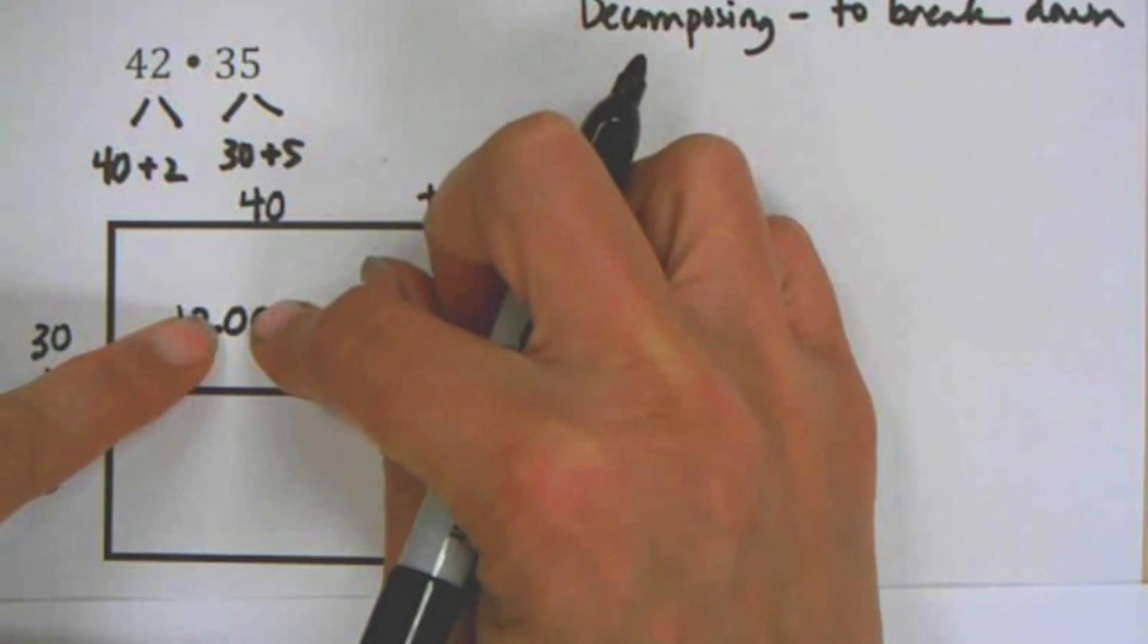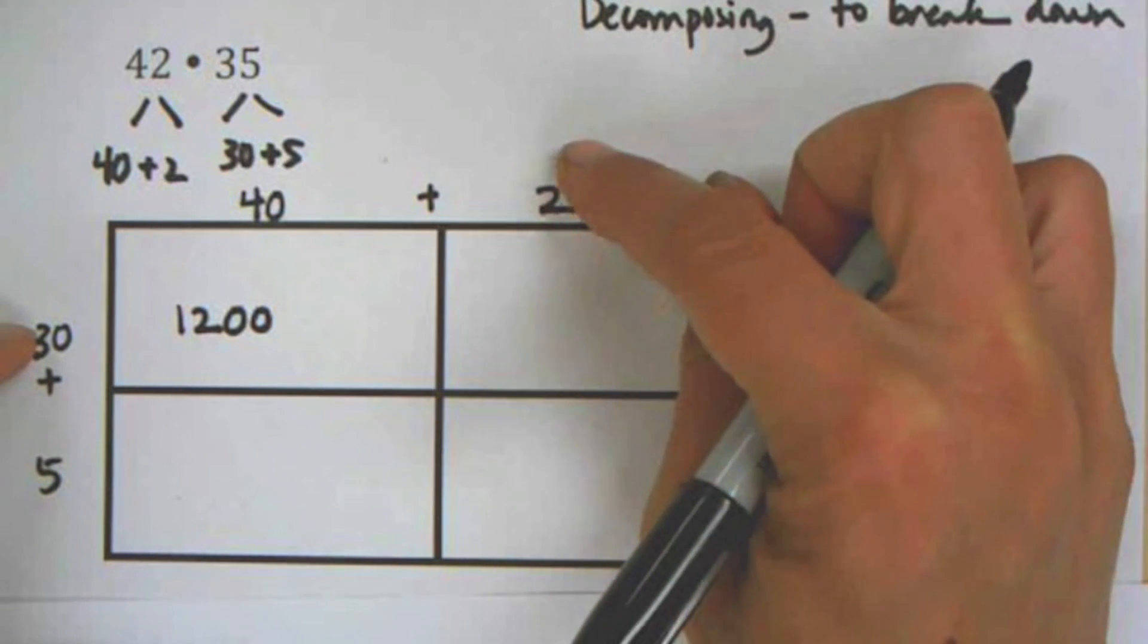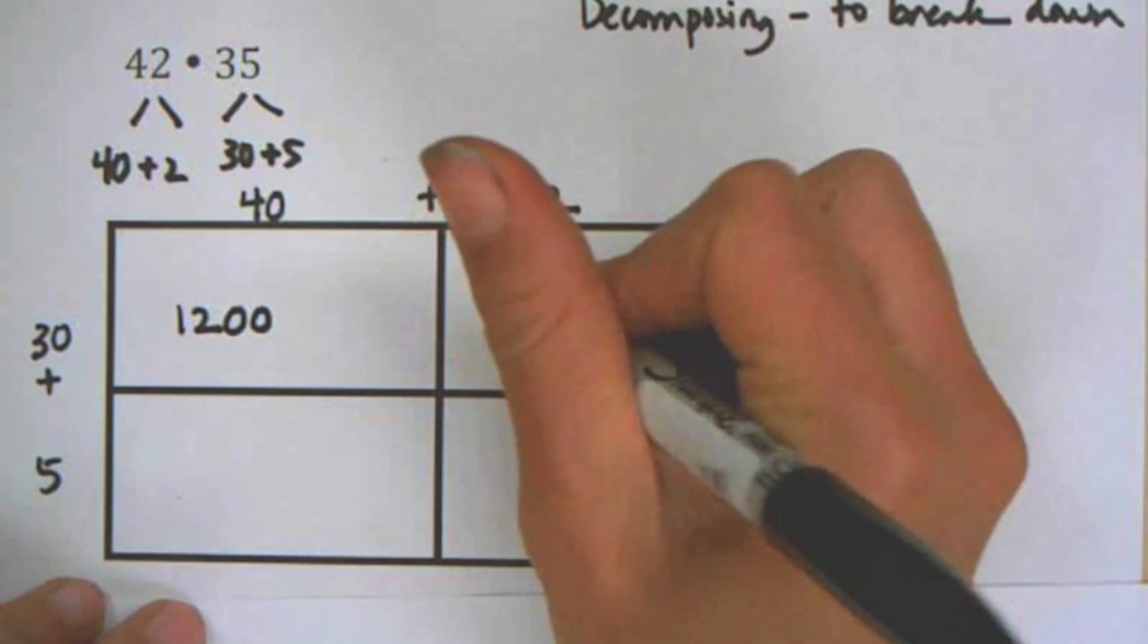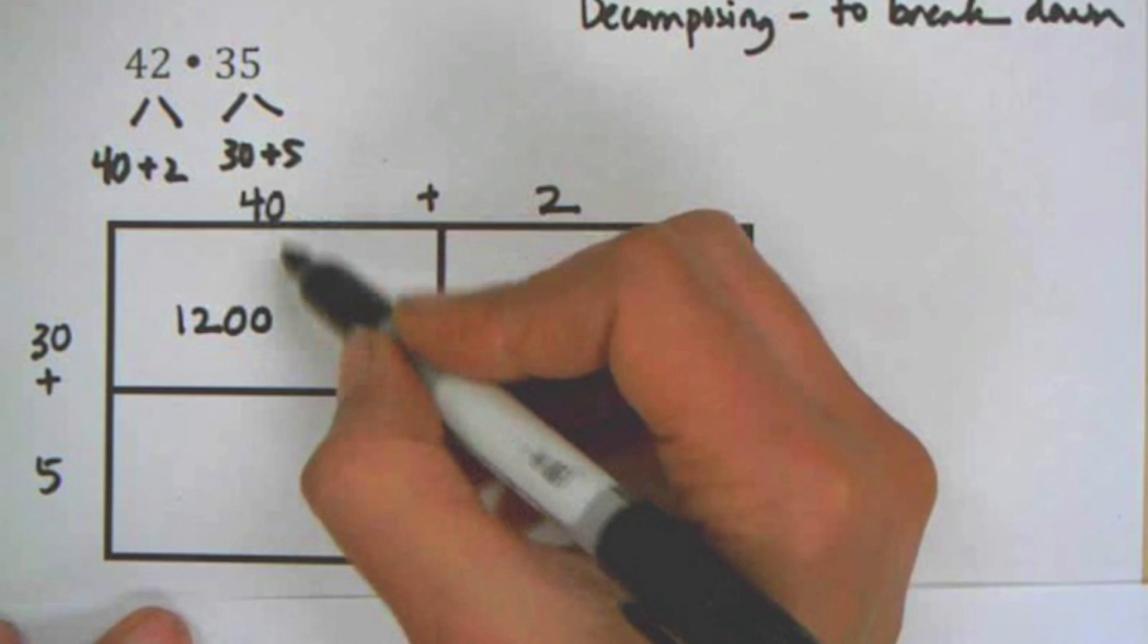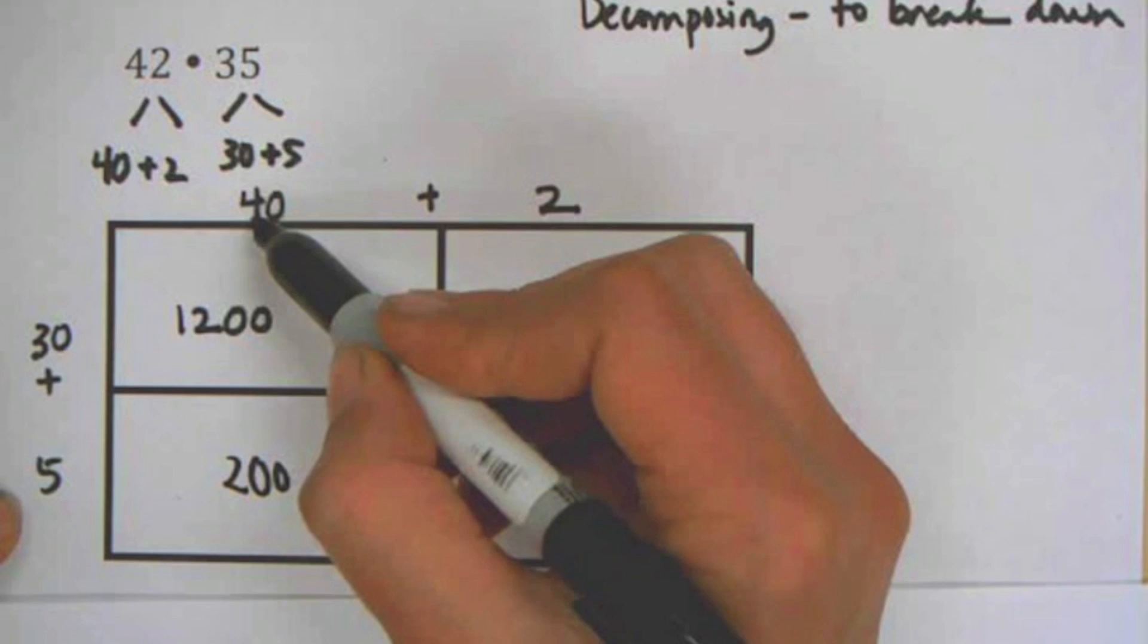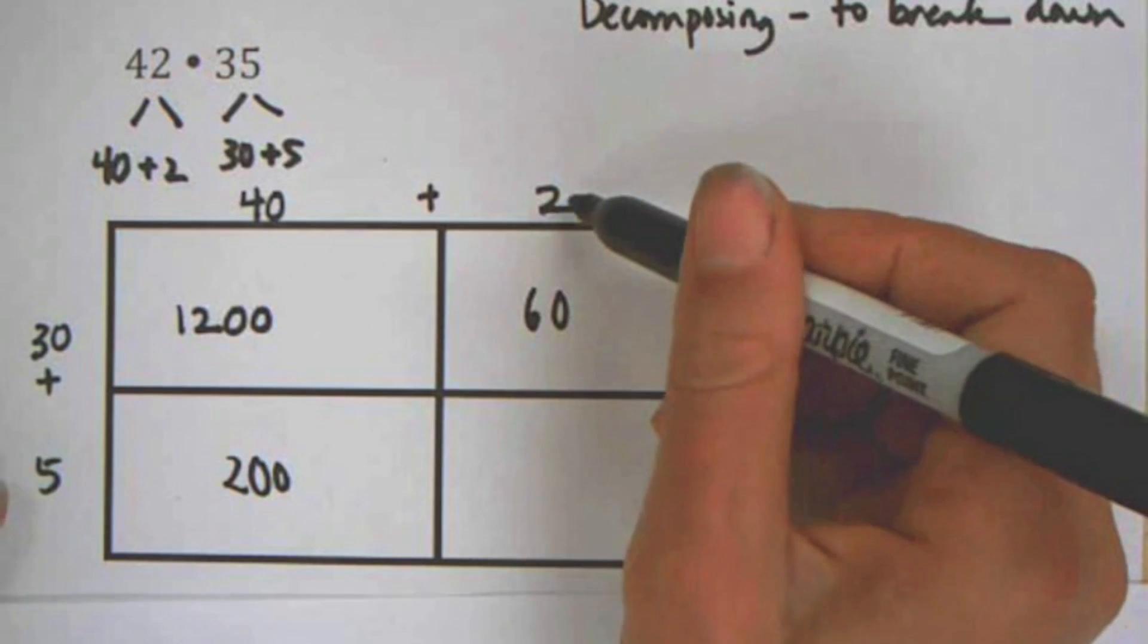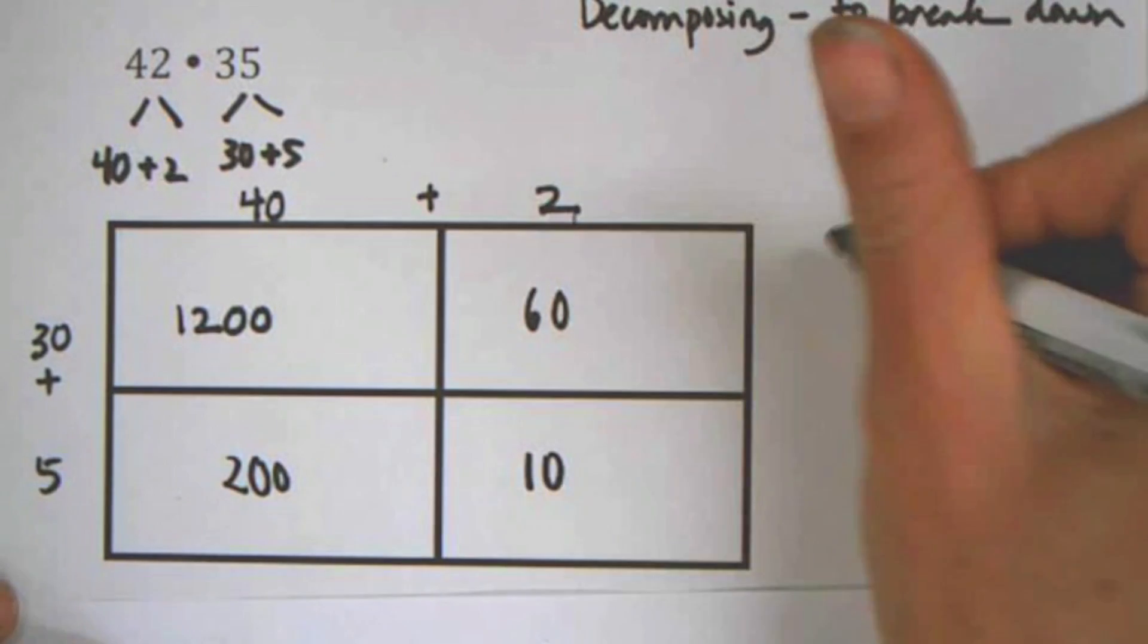So once again, I'm taking these two pieces and multiplying together. The next square is the 2 times the 30, so that's 60. The next square is 40 times the 5, so that's 200. And once again, you can think about 5 times 4 is 20, and this is 10 times larger, so 200. And then the last square, 2 times 5, so 10.